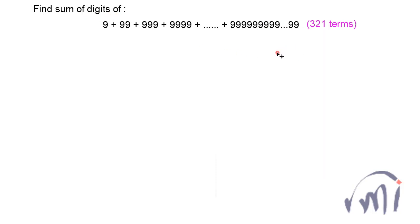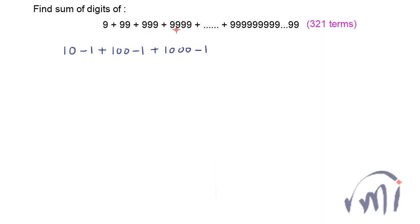So how to solve it? At first glance it looks like a very difficult problem, but believe me it is very simple. The trick is to rewrite each term: 9 as 10 minus 1, 99 as 100 minus 1, 999 as 1000 minus 1, 9999 as 10000 minus 1, and the last term as 10^321 minus 1.